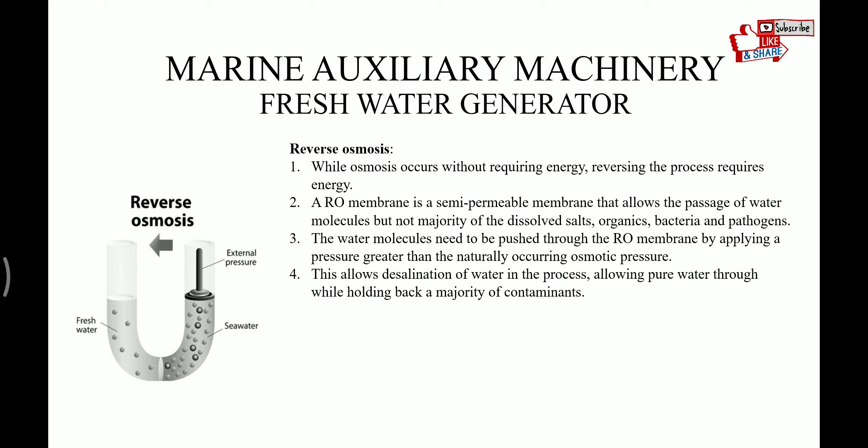Now, reverse osmosis. While osmosis occurs without requiring energy, reversing the process requires energy. A reverse osmosis membrane is a semi-permeable membrane that allows the passage of water molecules but not the majority of dissolved salts, organic bacteria, and pathogens. The water molecules need to be pushed through the RO membrane by applying a pressure greater than the naturally occurring osmotic pressure. This allows desalination of water, allowing pure water through while holding back the majority of contaminants. That is how the reverse osmosis process works.